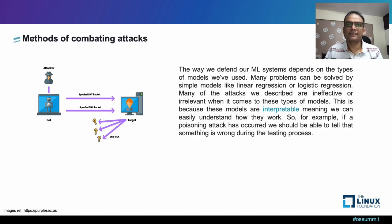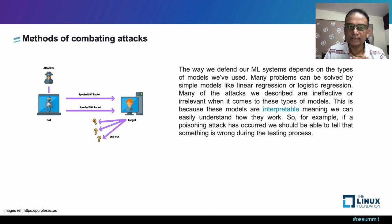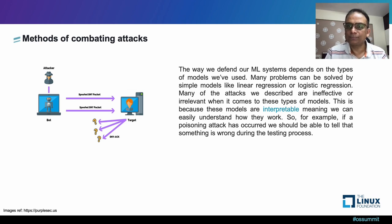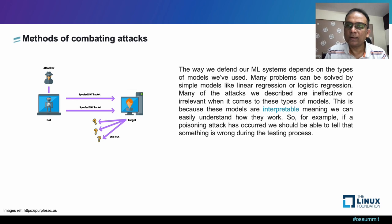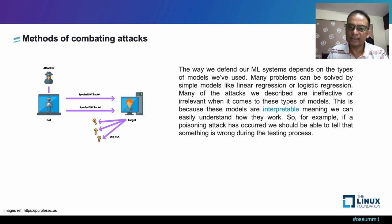Coming to combating attacks: the way we defend ML systems depends on the type of models used. Many problems can be solved with simple models like linear regression or logistic regression. More complicated models like neural networks are less interpretable. This means we have a poorer understanding of the inner workings of the model, which leads to hidden weaknesses and more opportunities for attacks. This is why most research in adversarial machine learning is aimed at combating attacks against these complex models.